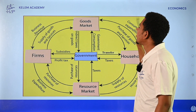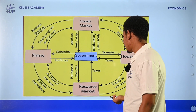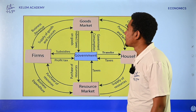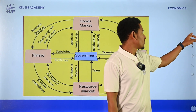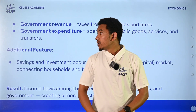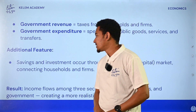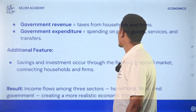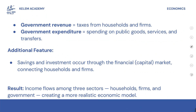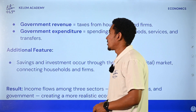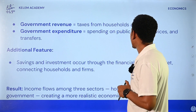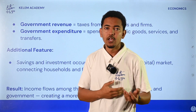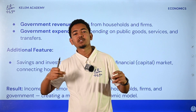In the economy, there are three decision-making people involved. The government collects tax from households and the government expands - we will have tax from public goods, services, and transfers. If you do not use the service, you will have a transfer from infrastructure.